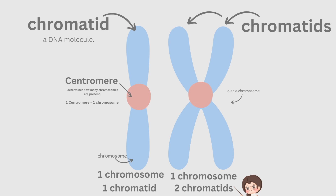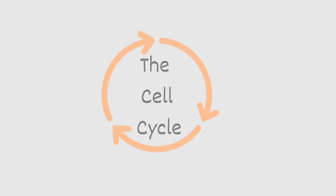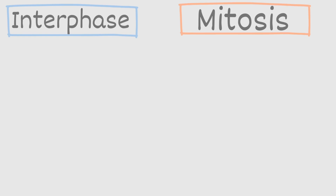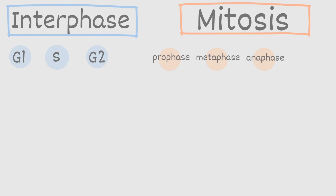Now that we can visualize the difference between a chromatid and a chromosome, let's move on to the cell cycle. The cell cycle is divided into two major phases: interphase and mitosis. Interphase is further divided into three phases: G1, also called first gap; S phase, also called synthesis; and G2, or second gap. Following interphase is mitosis, which is broken down into four phases: prophase, metaphase, anaphase, and lastly telophase.